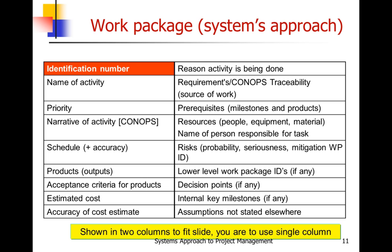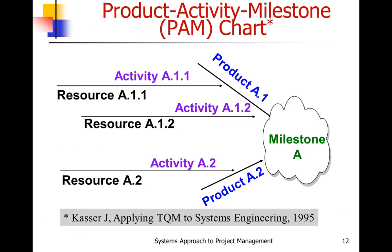A work package includes things like the reason the activity is being done, the resources needed, traceability, decision points, assumptions, and so on — all explained in session 4. Another planning tool is the product activity milestone (PAM) chart, introduced in 1995 in my book 'Applying Total Quality Management to Systems Engineering.' For those with a background in TQM, you can see that it's essentially a cause-and-effect chart in reverse.